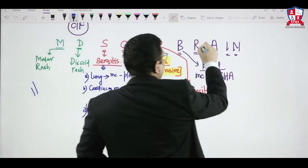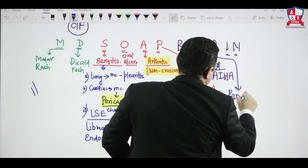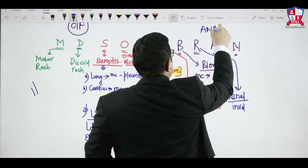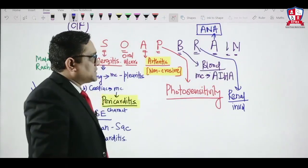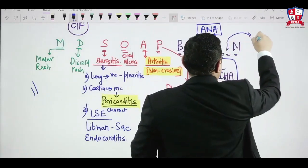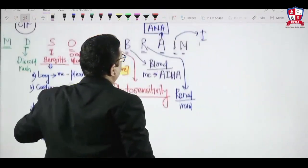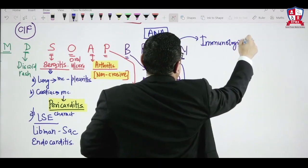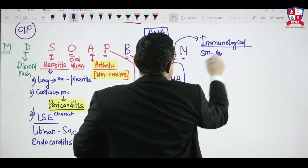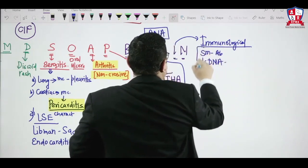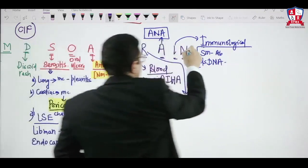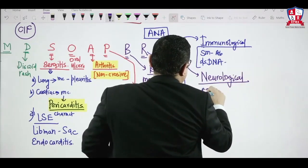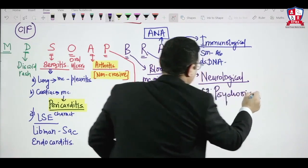R stands for renal failure or renal involvement. A stands for anti-nuclear antibodies. I stands for immunological manifestations — such as Smith antibody and double-stranded DNA antibody formation. N stands for neurological manifestations, for example psychosis, which can be seen in SLE patients.